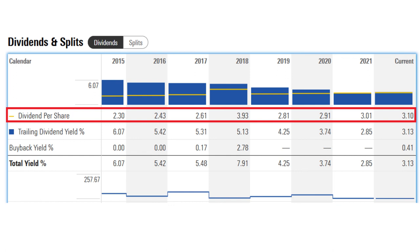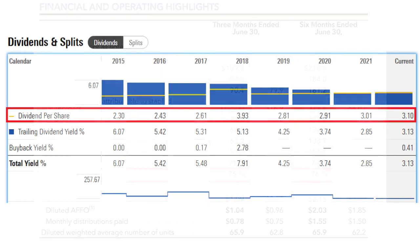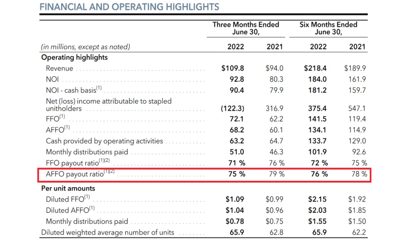The distribution increase is totally in line with their FFO-per-share growth, so it's not risky — the management uses a very conservative approach. The last indicator was payout ratio, and for Granite it is 79.8%, which is good. It means they can use 20% of their cash flow to invest in themselves and acquire new properties without raising new shares, and continue to grow in the future.